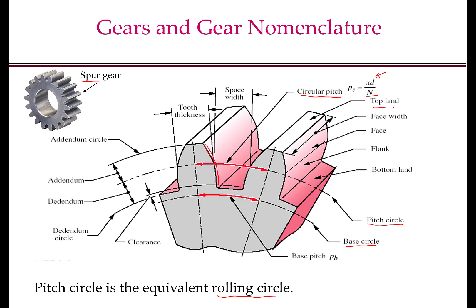The top face of the gear is called the top land and the bottom face is called the bottom land. The dimension of the gear teeth in the axial direction is called the face width. The portion of the gear surface above the pitch circle is called the face and the portion below is called the flank. The addendum circle passes through the top of the gear teeth, and the dedendum circle passes through the bottom. The difference between the pitch circle radius and the addendum circle radius is the addendum; the difference between the pitch circle radius and the dedendum circle radius is the dedendum. When two gears mate, there is usually a clearance between the top land of one gear and the bottom land of the other.